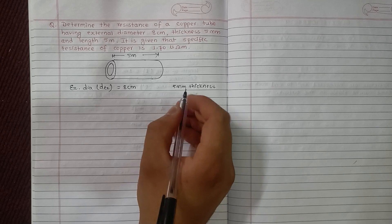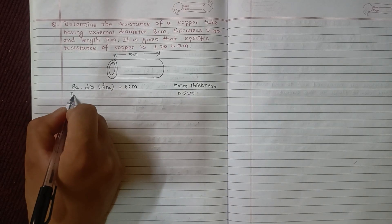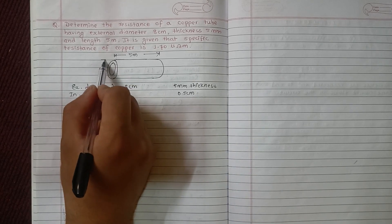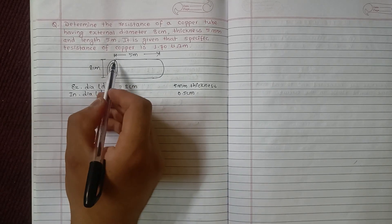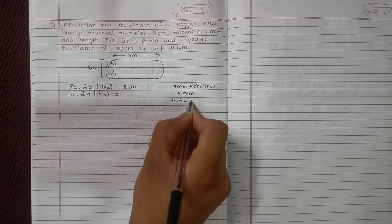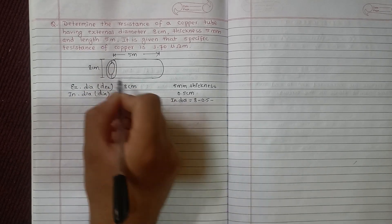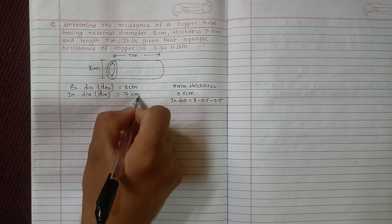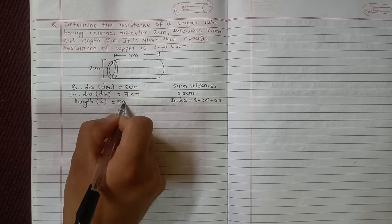Let's convert thickness to centimeters: 0.5 cm. Now for the internal diameter - the external diameter is 8 centimeter, so the internal diameter is 8 minus the thickness on both sides, which is 8 minus 0.5 times 2, equals 7 cm. And length is 5 meter.